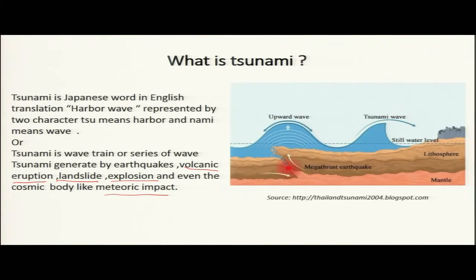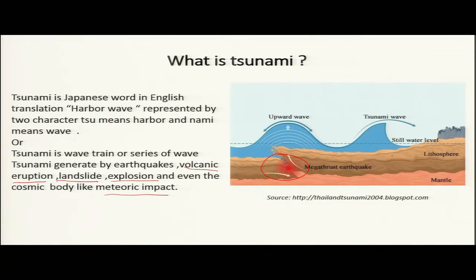Here is the schematic diagram of a tsunami generated by an earthquake. After the earthquake, energy is released and transported into the water column above, generating waves that travel towards coastal areas and form the tsunami wave.